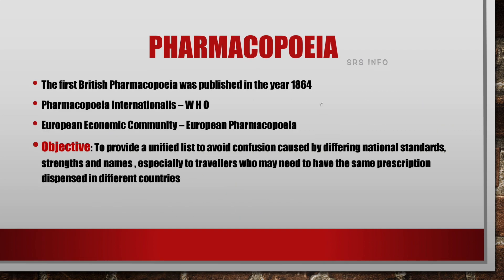Now let us understand some developments in Pharmacopoeia. The first British Pharmacopoeia was published in 1864. The history of Pharmacopoeia started many years back — even around 52 AD — and it was initiated in China. At that time, around 60 Pharmacopoeias were available, one for each particular city or town.